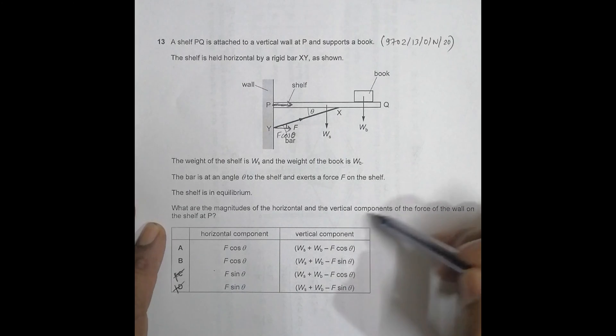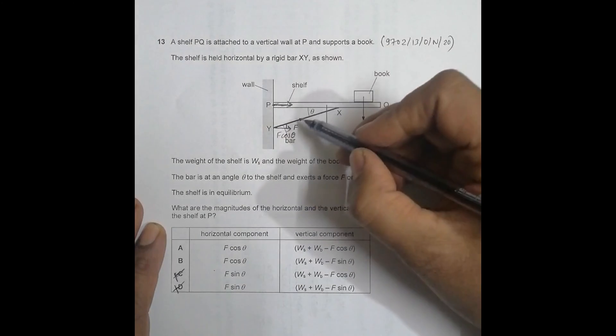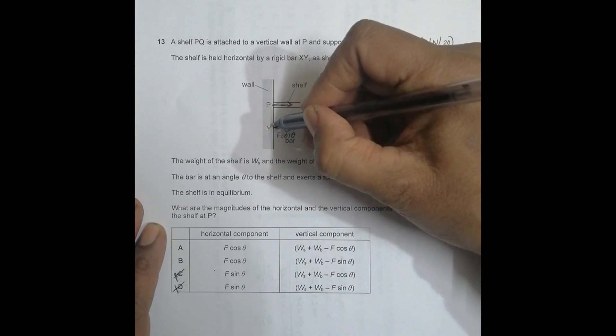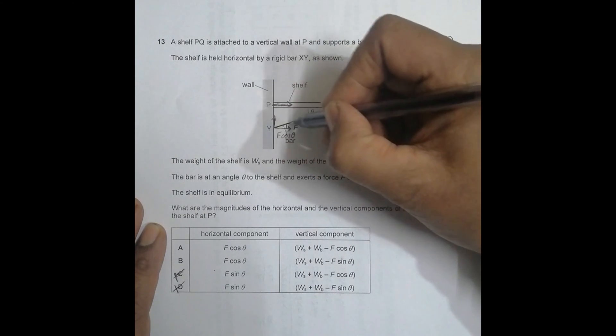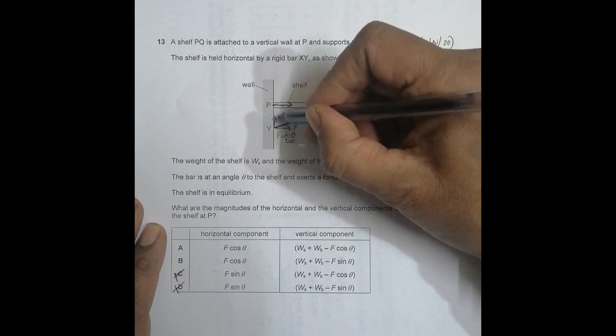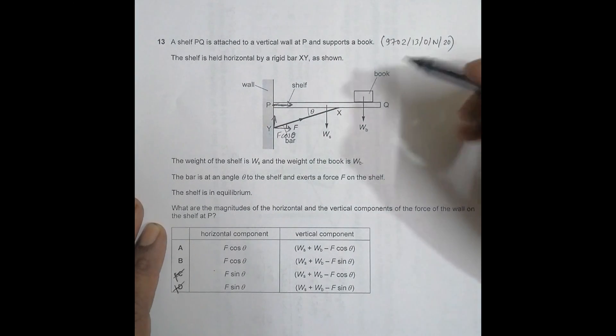Next, we have to find the vertical component. This force will have a vertical component. It will be F sin theta. Since this angle is theta, it should be F sin theta.